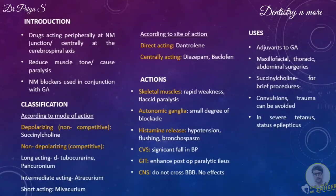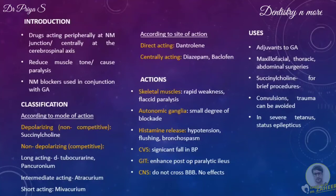Muscle relaxants are classified according to mode of action as depolarizing or non-competitive muscle relaxants, and as non-depolarizing or competitive muscle relaxants. Acetylcholine is a neurotransmitter found at the neuromuscular junction. Depolarizing muscle relaxants act as acetylcholine receptor agonists by binding to the ACh receptors of the motor end plate, thus generating an action potential. That is why they are known as depolarizing or non-competitive muscle relaxants. For example, succinylcholine.